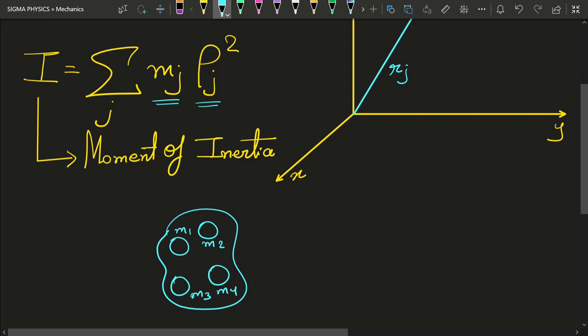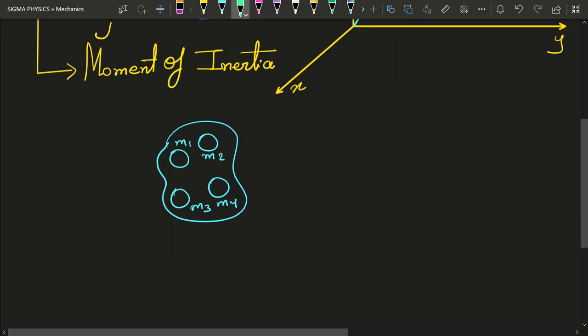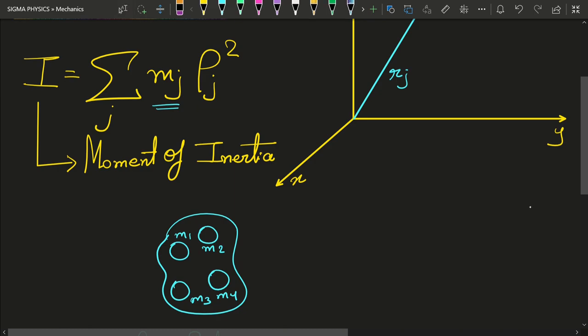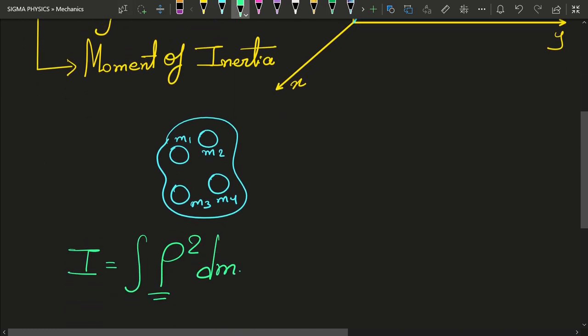We have to replace the summation with an integral. That is, the moment of inertia will now become equal to integral of rho squared dm. Here we have replaced rho j by rho and we have replaced mj by dm.